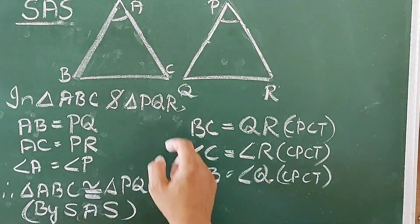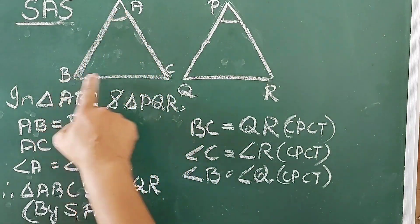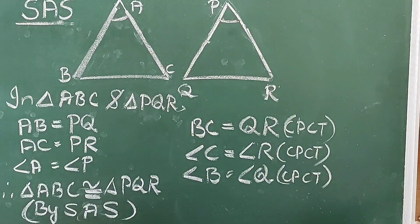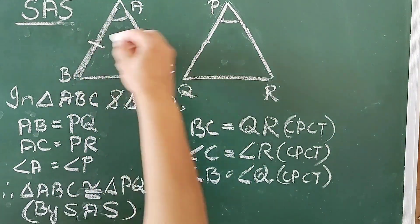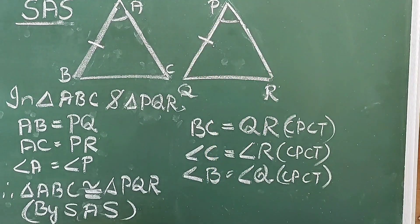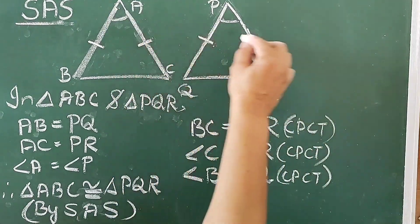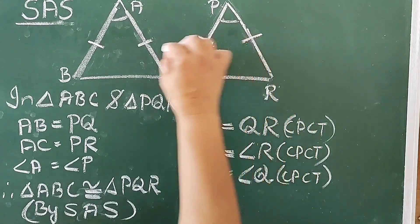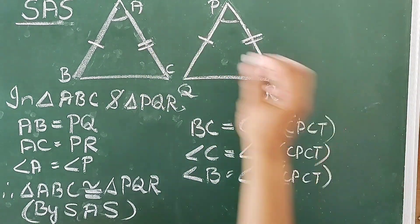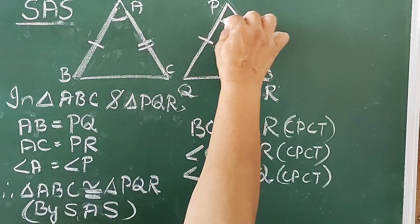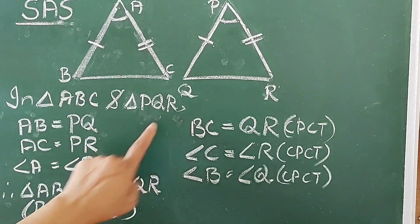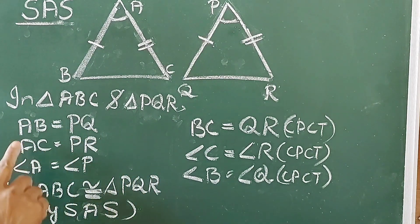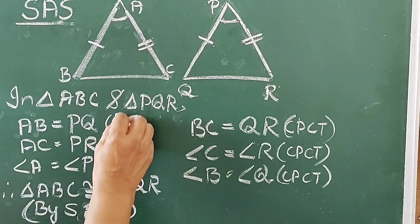Let us discuss this with two triangles. Consider triangle ABC and triangle PQR. It is given: side AB equal to side PQ, side AC equal to side PR, angle A equal to angle P. In triangle ABC and triangle PQR, AB equal to PQ — that is given.